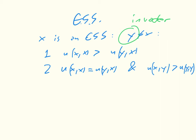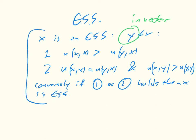the utility of x in y is greater than the utility of y in y. And conversely, if one or two holds, then x is an ESS. Okay, so this is our general theorem.